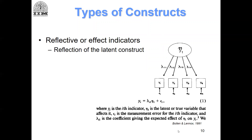If you see this diagram — from the paper by Bollen and Lennox, given as a reading material — there is a latent construct NITA1, shown in a circle or oval, which indicates it is a latent construct. In SEM terminology, a circle or oval always stands for a latent construct, while a square or rectangle always stands for an observed item. So Y1, Y2, Y3, Y4 are four indicator items for the latent construct NITA1.